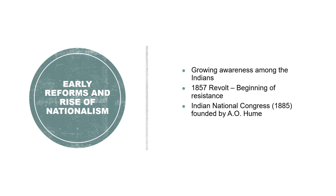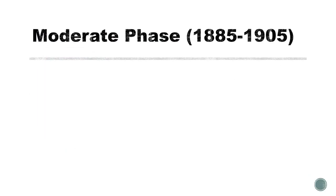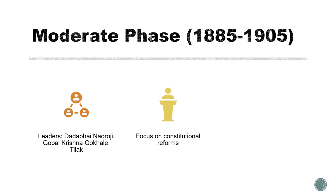In 1885, the Indian National Congress was founded by Allan Octavian Hume. The INC initially aimed for moderate reforms and sought to address grievances with the British government. The period between 1885 and 1905 is known as the moderate phase. During this time, leaders like Dadabhai Naoroji, Gopal Krishna Gokhale, and Bal Gangadhar Tilak worked together achieving constitutional reforms through petitions and negotiations. Key achievements included the Indian Councils Act of 1892, which increased Indian representation in legislative councils, and the formation of the INC as a political force.